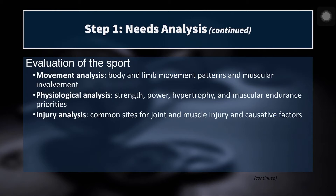In the evaluation of the sport there are three primary components, each with sub-components. The first is a movement analysis of the sport, where we look at body and limb movement patterns and muscular involvement. For example, if you are working with a track and field athlete: are they a thrower, a jumper, or a sprinter? If they're a sprinter, are they a short sprinter or a long sprinter?